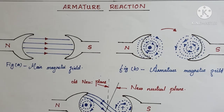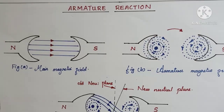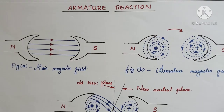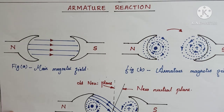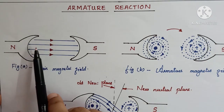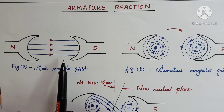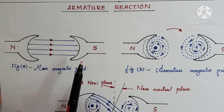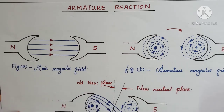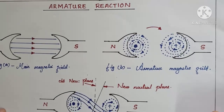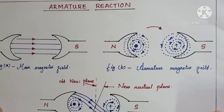In this paper you can see three figures. The first figure A shows the main magnetic field. The main magnetic field is moving from north pole to south pole and it is a steady magnetic field. The term steady magnetic field is very important in this case.